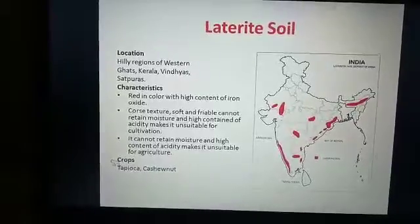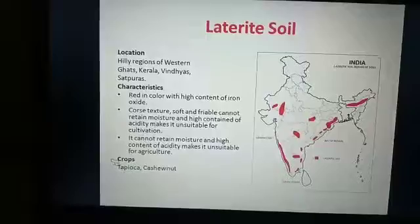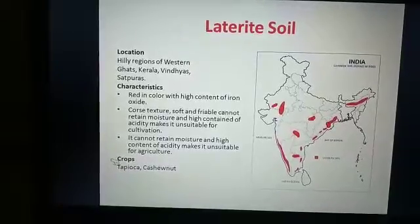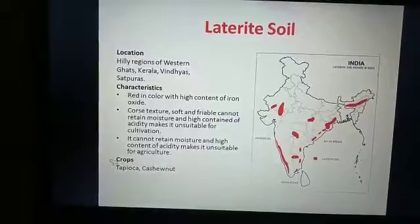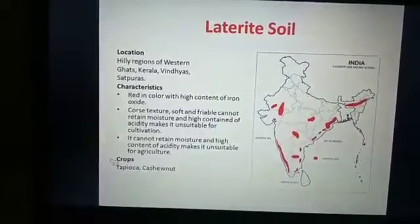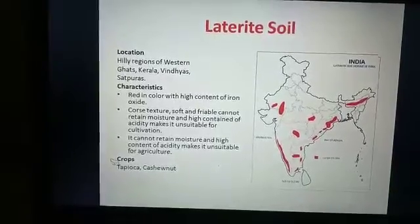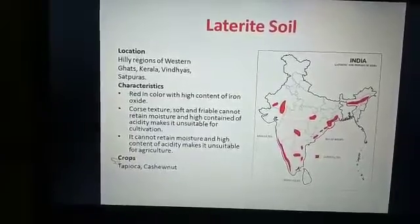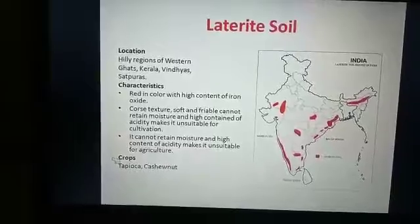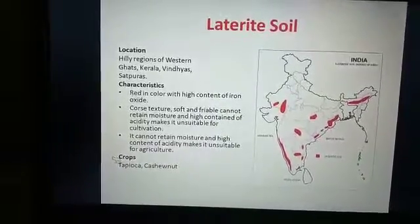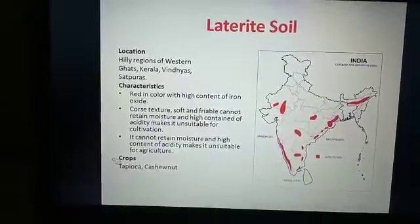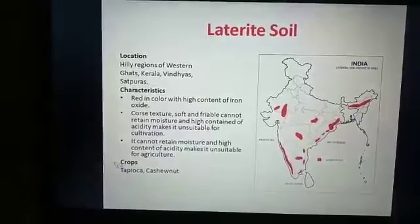Laterite soil is red in color because of the high content of iron. It has a coarse texture, is soft and friable, but it cannot retain moisture. That is why it is not suitable for agriculture. Some cashew nut and tapioca are grown here, and grasses and shrubs grow abundantly. It becomes hard like a brick when it dries up. Since it lacks moisture-retaining capacity, it becomes hard in the dry season and is not useful for agriculture, but it provides very good building material. The main use of laterite soil is for the formation of bricks, which are used for building purposes.